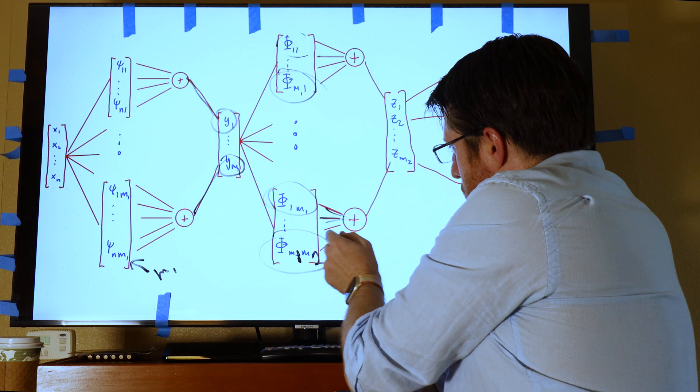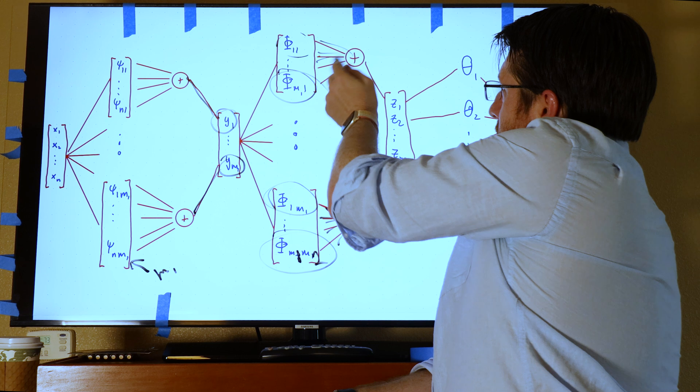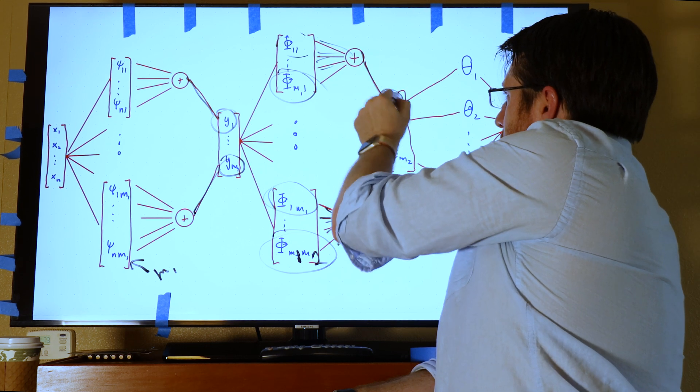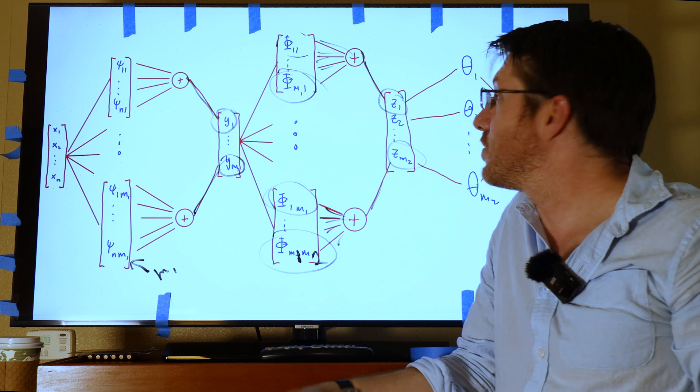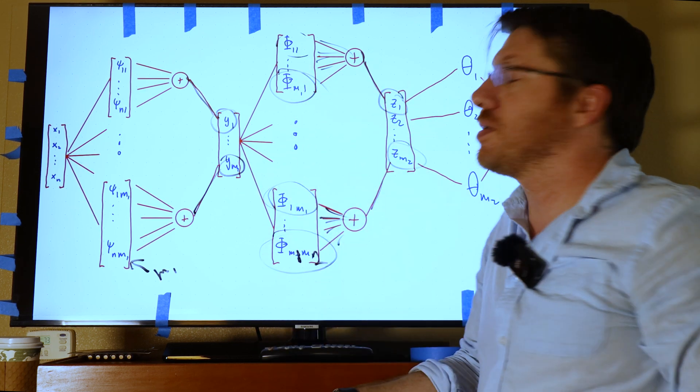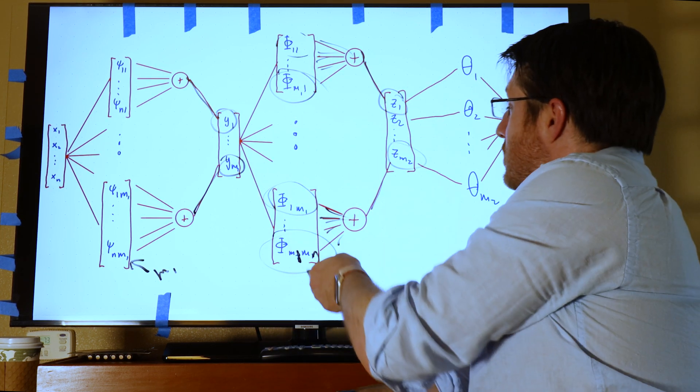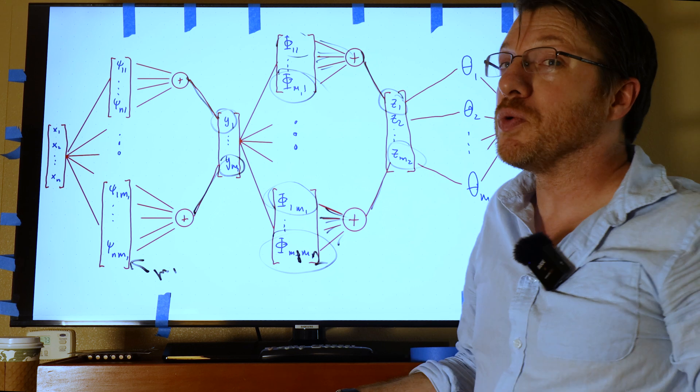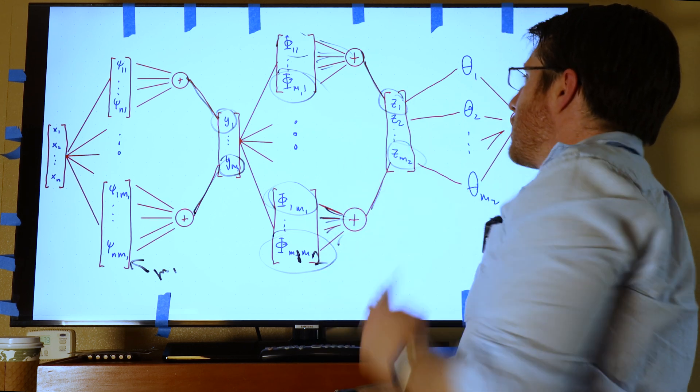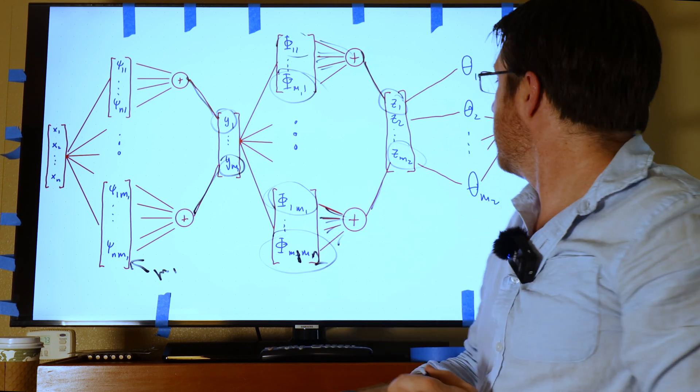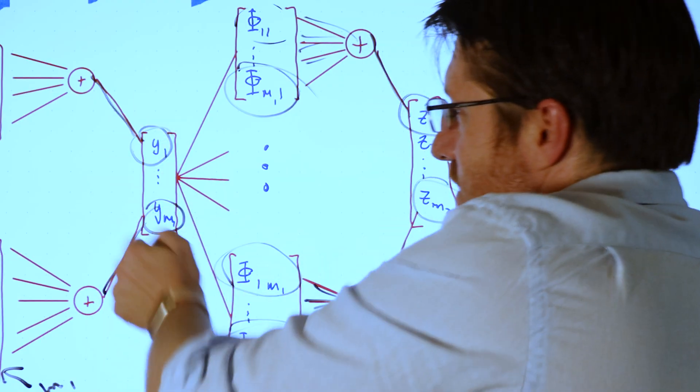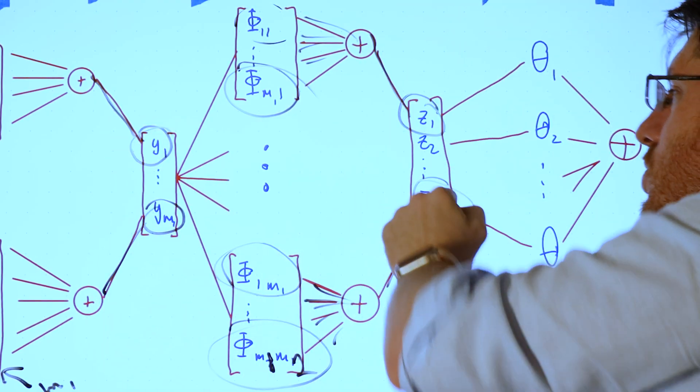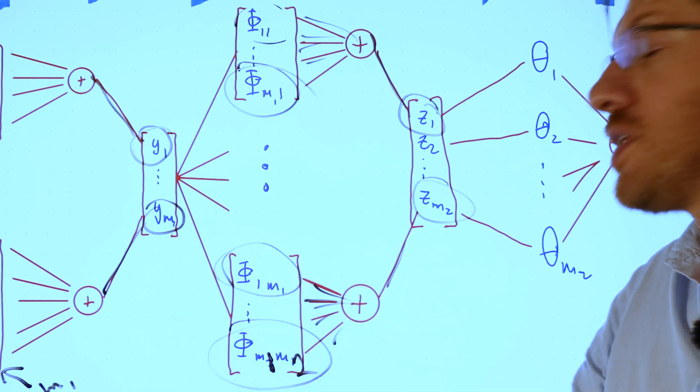So what we're going to do is we're going to add up each one of these guys individually, and each of these guys individually, and then we transmit them one at a time to each one of these zs respectively. So this collection summed together is z1. This collection added together is z_{m2}. And so now we have another hidden layer, which is of size m2. So this was size n, this was size m1, and this is size m2. And m1 and m2 are user selected.